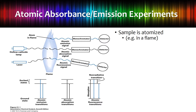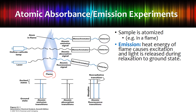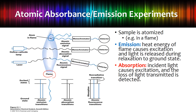Atomic absorption or emission experiments require the sample to be atomized — typically using a flame. In an emission experiment, the heat of the flame excites the atoms, and when they relax back down, an emission signal is released. You can then select a particular wavelength and detect how much light came out.